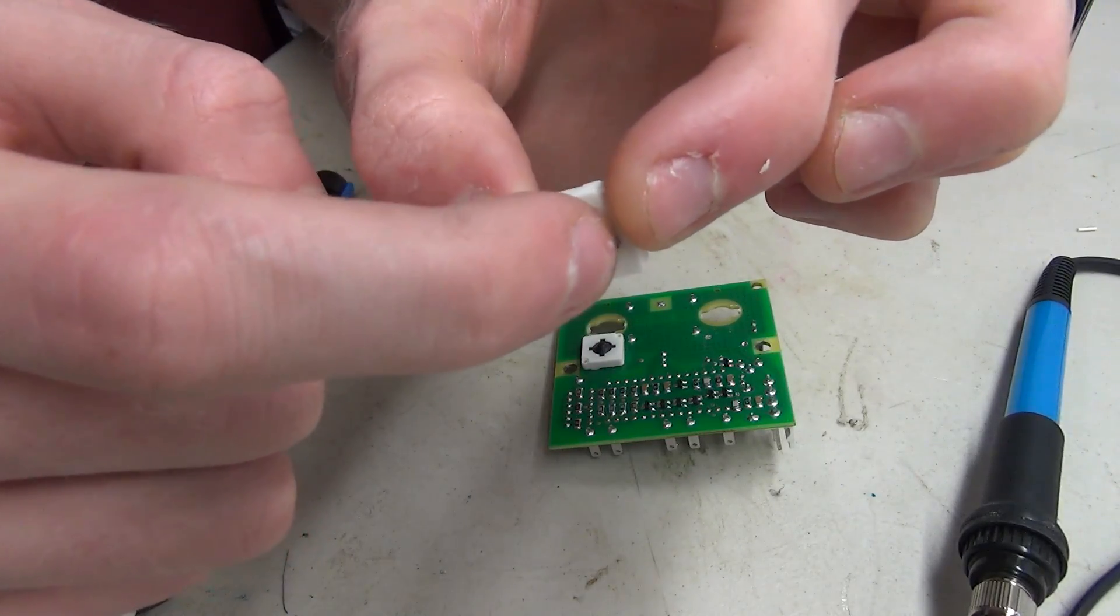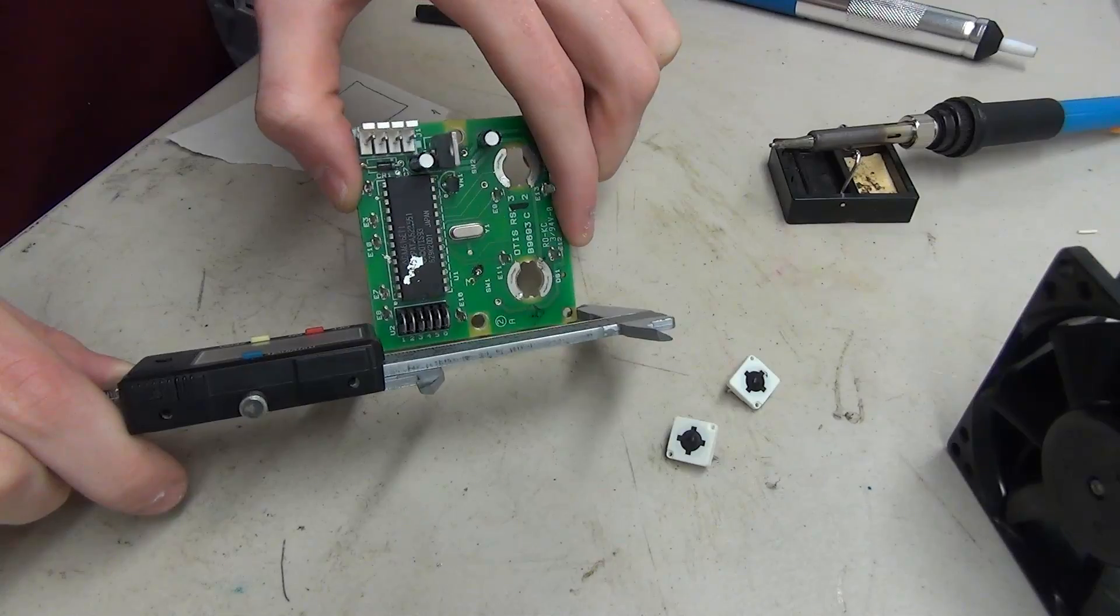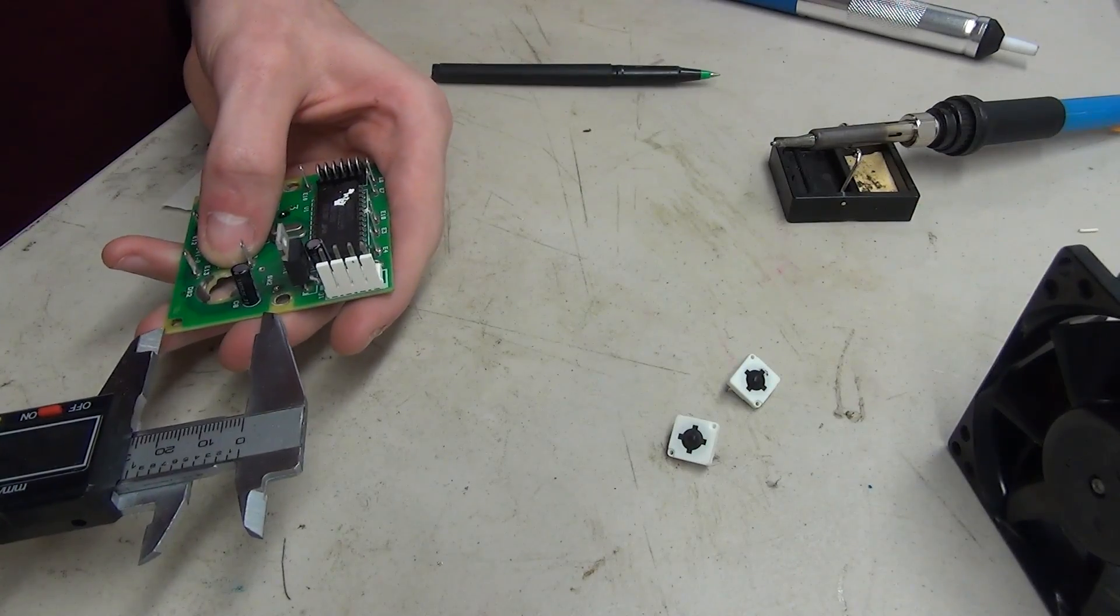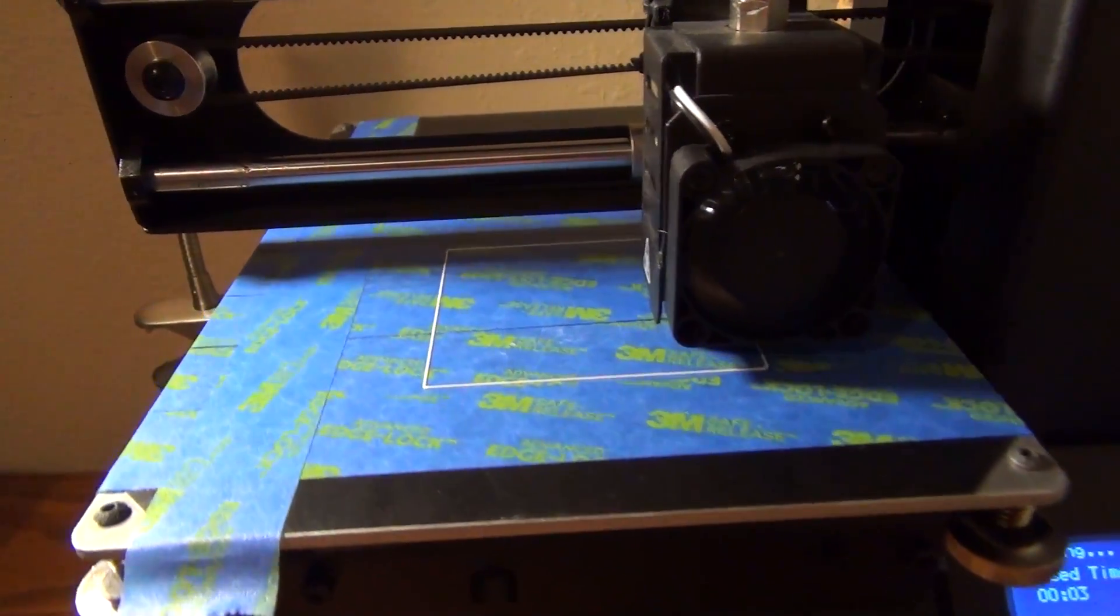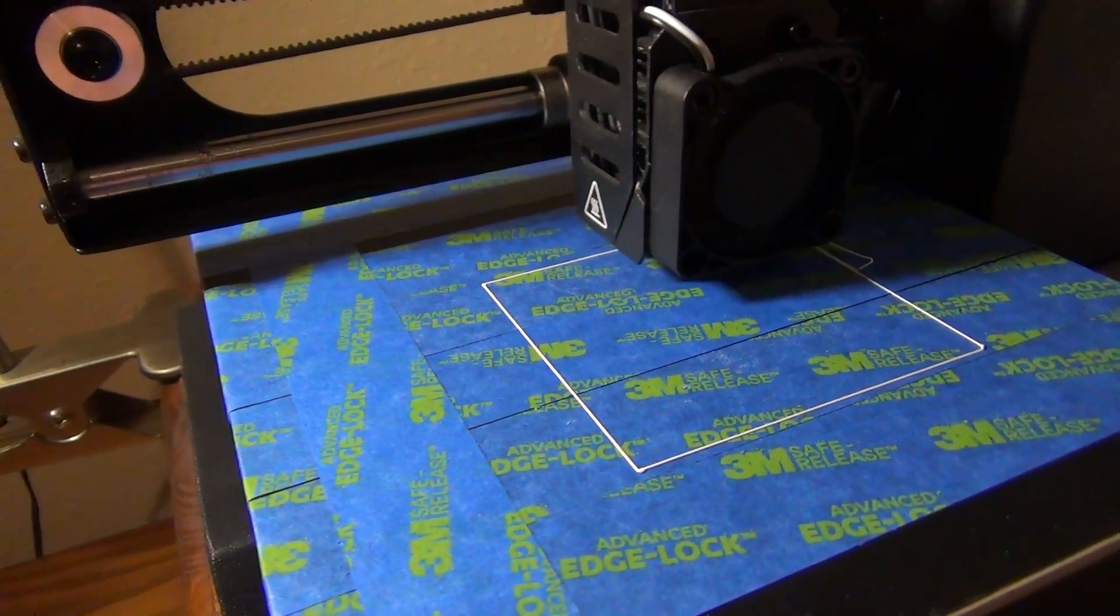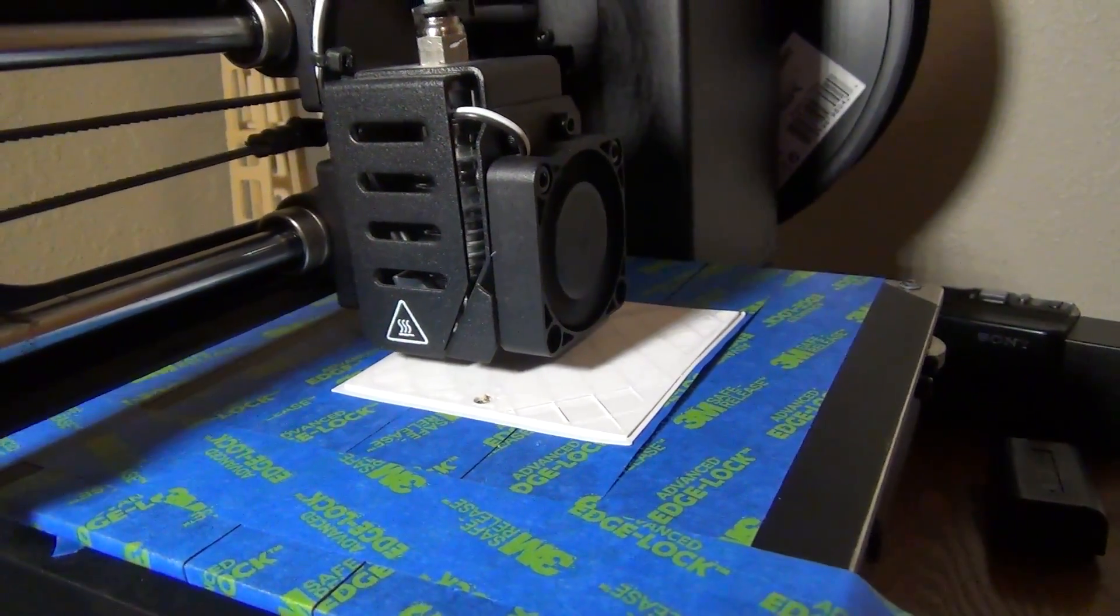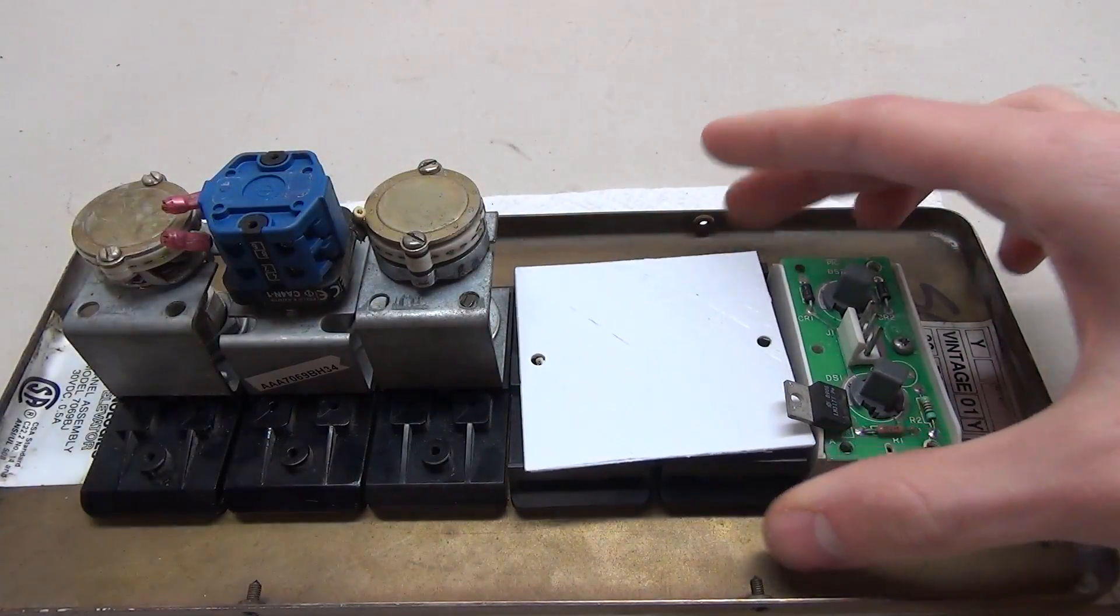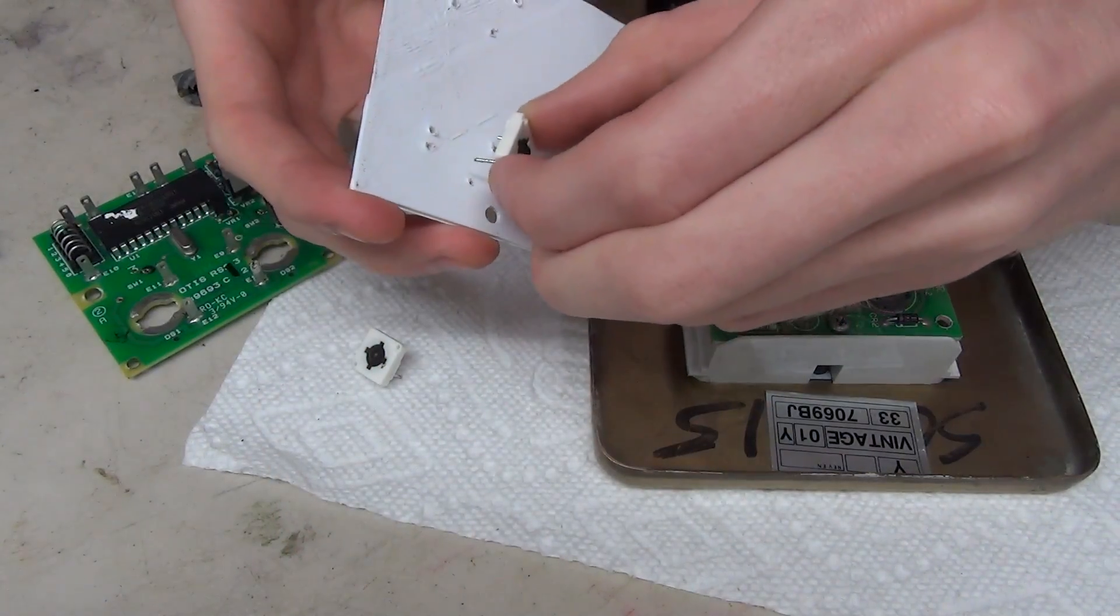The first thing I did was take off the old switches on the old circuit board so that we can keep the consistency of the button the same. Then I took some measurements of the old board and wrote them down so I can make a CAD model on my computer and then 3D print a new piece of plastic that we can put all the new components on.